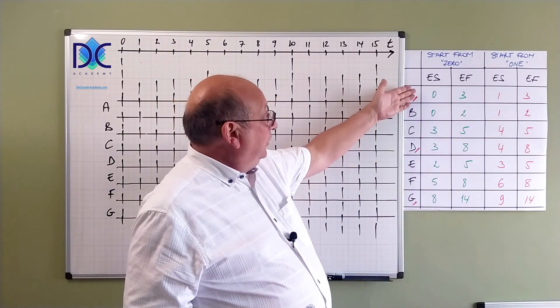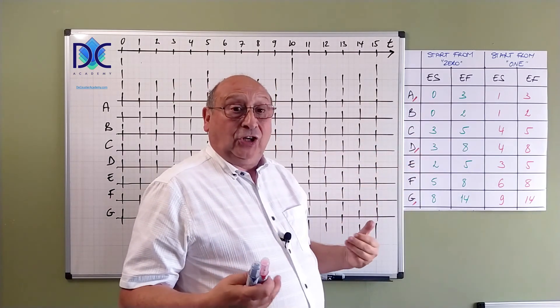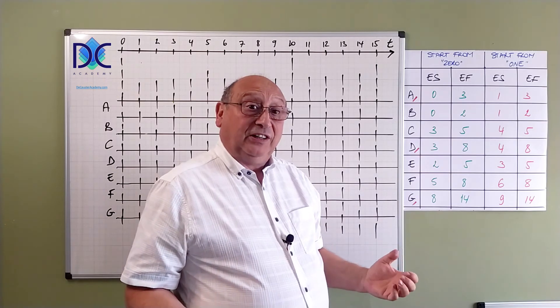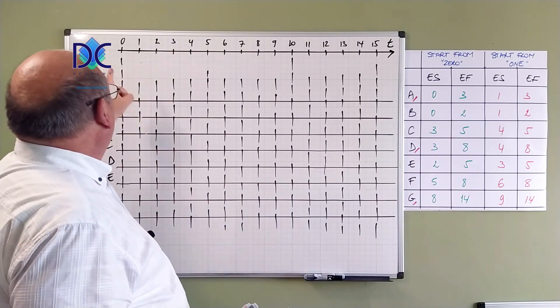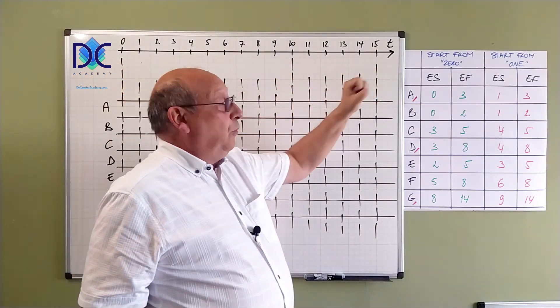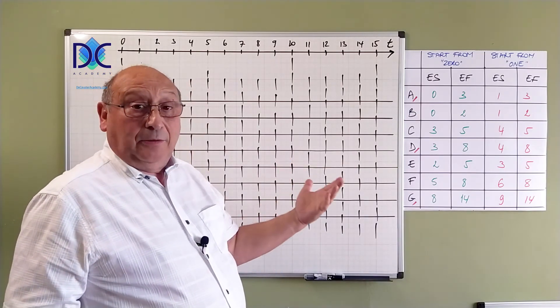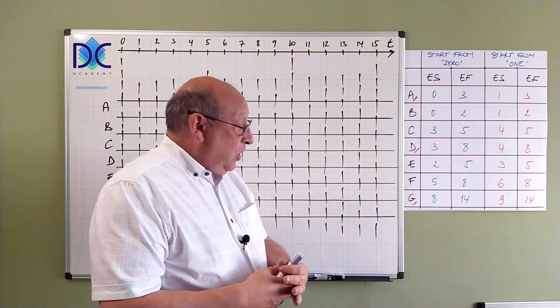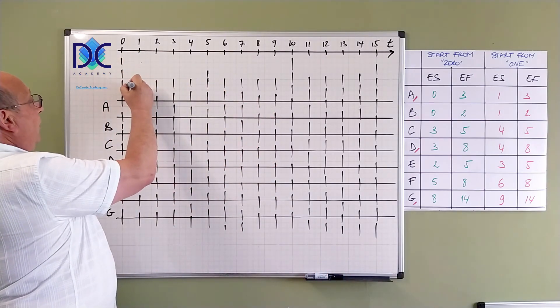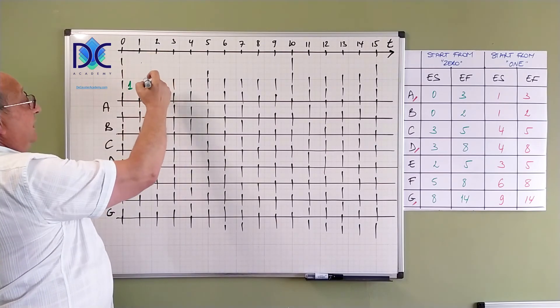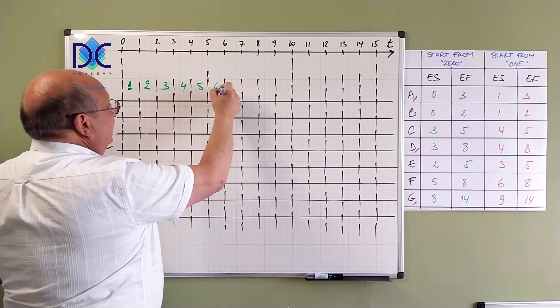When we look at the early starts, we see that there is a slight difference because we calculate differently. In the start from zero, we're using the coordinate line, using the coordinates from 1 till 15 or till 14 in our case. While in the other method, we're counting the days. When we look at the days here, from 0 to 1 is day 1, from 1 to 2 is day 2, 3, 4, 5, 6.